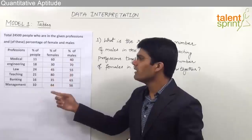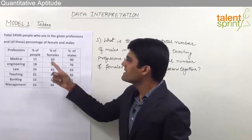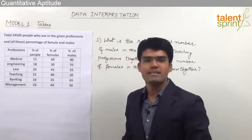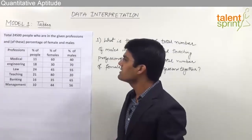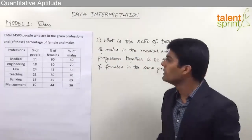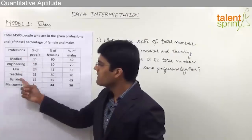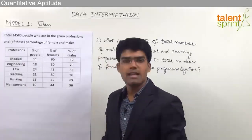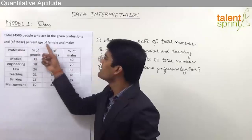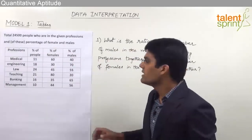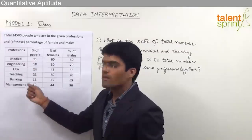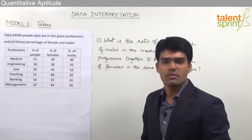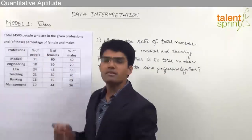As you can see here, we have a table with four columns. The first column shows professions, the second one percentage of people, the third one is percentage of females, and the fourth one says percentage of males. The information here reads: total 24,500 people are in the given professions — medical, engineering, law, teaching, banking, and management. For each profession, the percentage of people is given, along with percentage of females and percentage of males. Total number of people is 24,500.